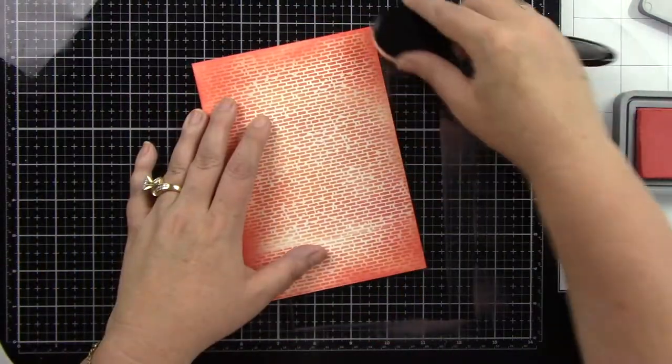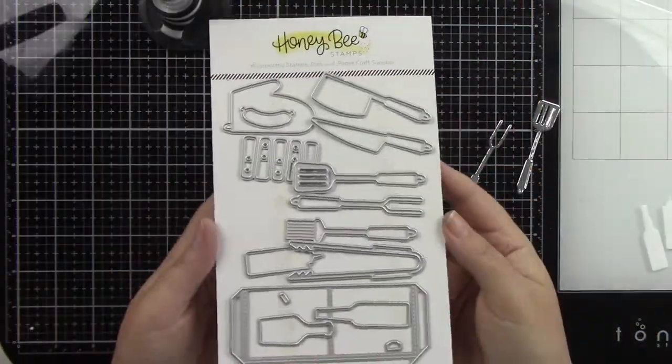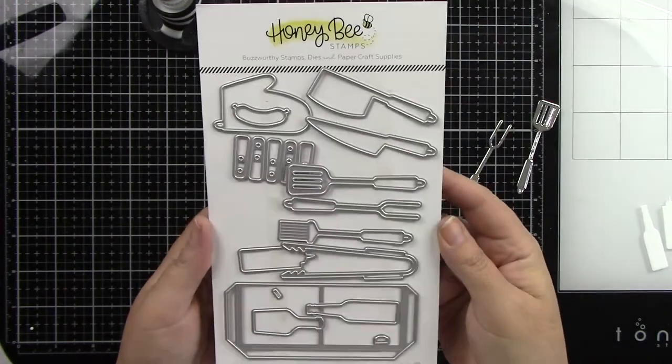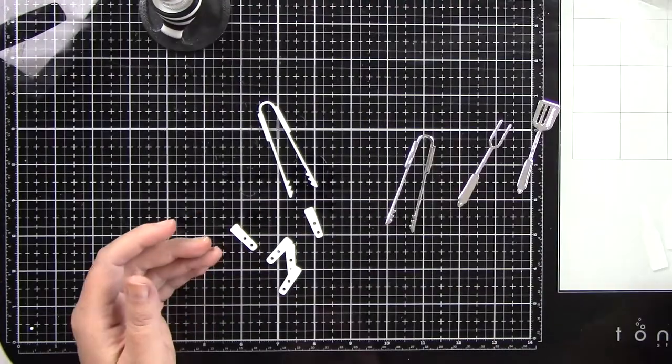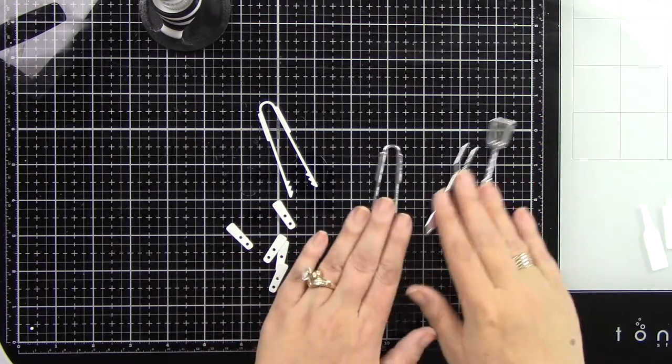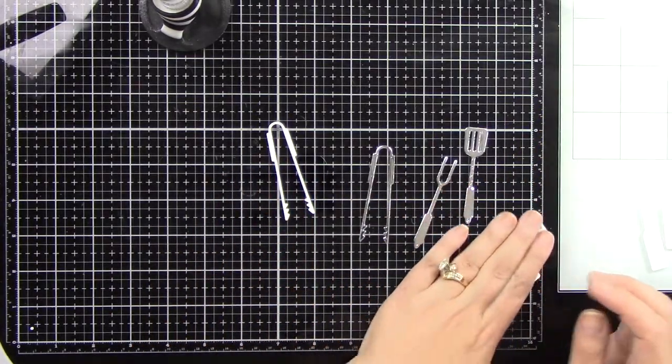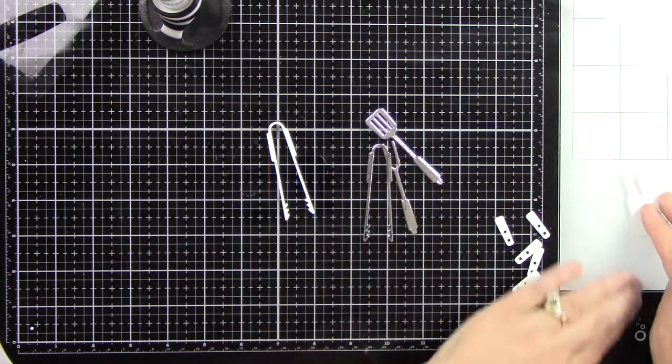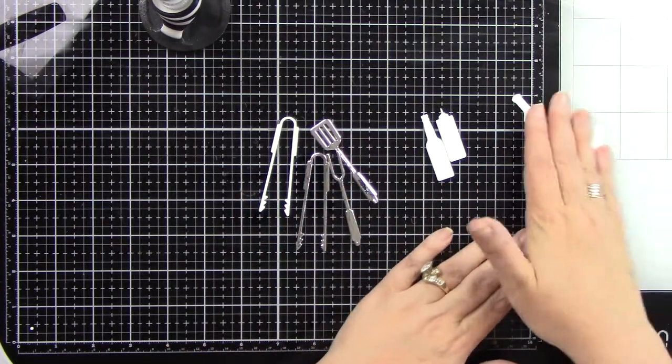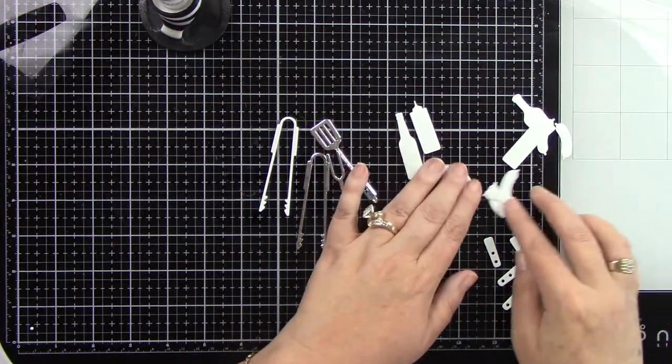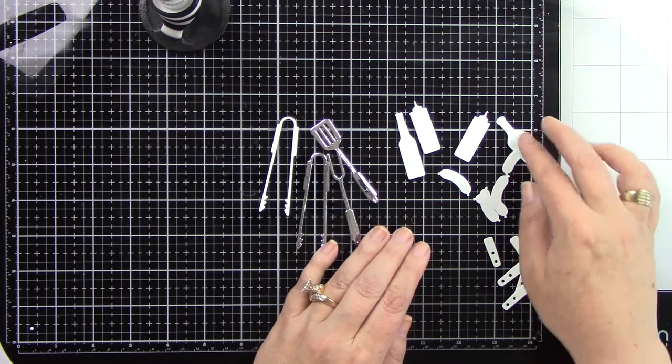Now that's all done. Here is the apron barbecue add-on. This has such cute pieces in it. I have die cut my pieces from silver cardstock. The tongs I've also die cut from white cardstock. The rest of the pieces I have die cut from white cardstock. There's the handles, the little lids for the beer bottle and barbecue sauce bottle from silver cardstock.